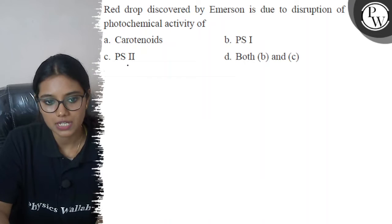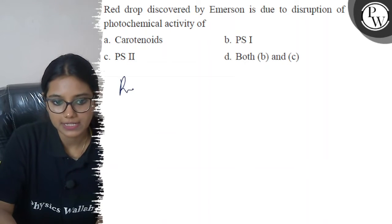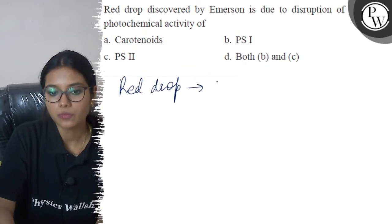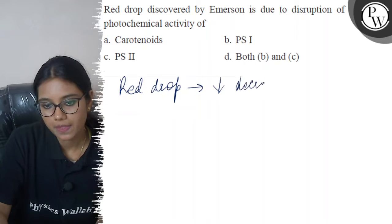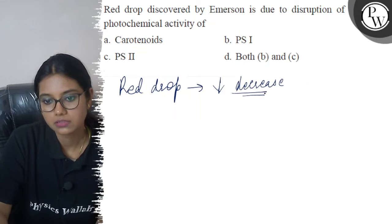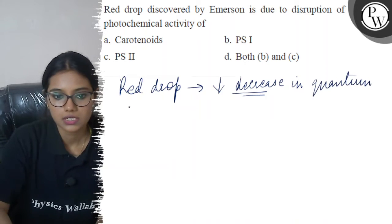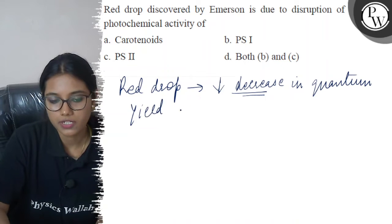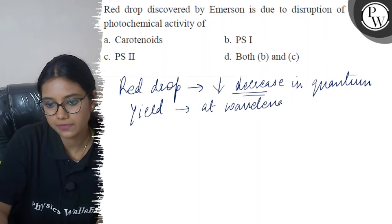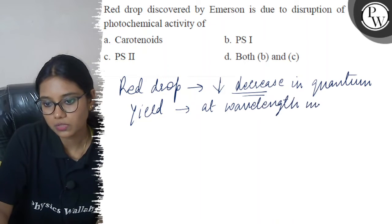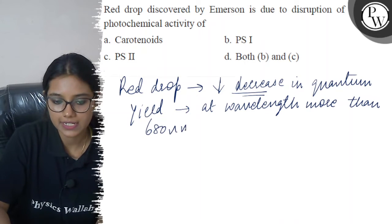Option C PS2 and option D both B and C. So, red drop shows that there's a decrease in quantum yield at wavelength more than 680 nanometer.